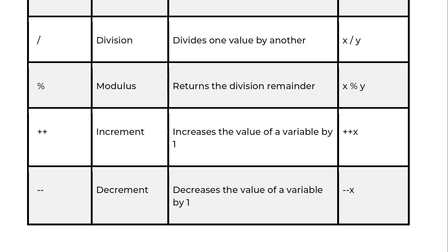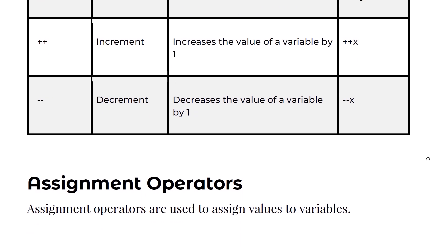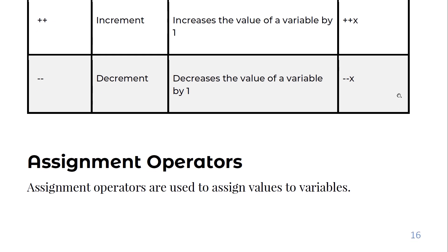It is very important to think like a Java compiler to understand what the code does and how to solve problems. Decrement works the same way: minus minus decreases the value of a variable by one. You can write minus minus x or x minus minus, with the same pre and post behavior as increment.